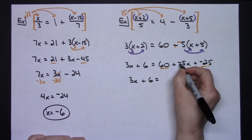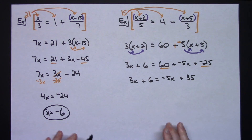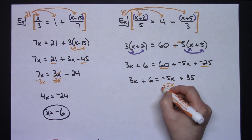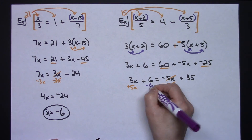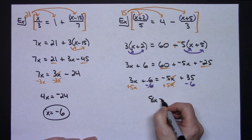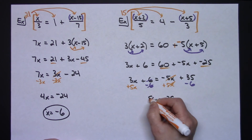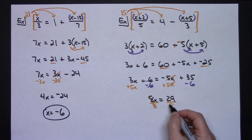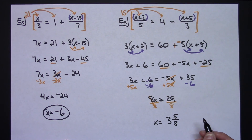So we have 3x plus 6 equals negative 5x plus 35. Adding 5x to both sides and subtracting 6 from both sides in the same step: negative 5x plus 5x goes away, and 6 minus 6 goes away, leaving 8x equals 29. Dividing both sides by 8 — rather than converting to a decimal, treat it as an improper fraction and convert to a mixed number. 8 goes into 29 three times with 5 left over, so x equals 3 and 5 eighths.